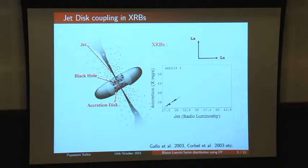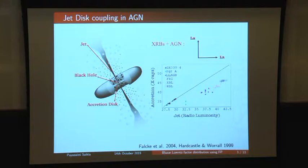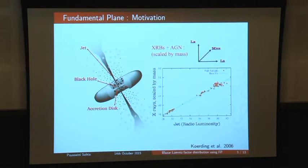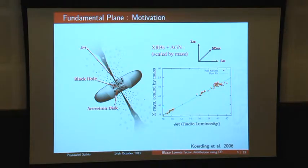Do we see the same thing in active galactic nuclei? We do see a correlation between X-ray and radio luminosity in AGN, but for a given X-ray luminosity, the AGN have a higher radio luminosity compared to X-ray binaries. However, we can combine all of these correlations by adding one more dimension — the mass of the black hole. When I scale the X-ray luminosity with mass, the X-ray binaries and supermassive black holes all show the same correlation: the fundamental plane of black hole activity.